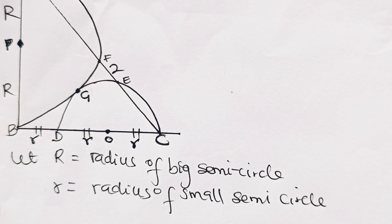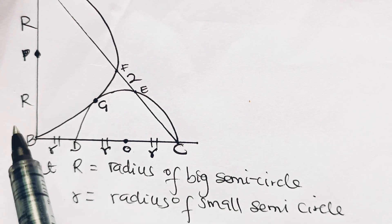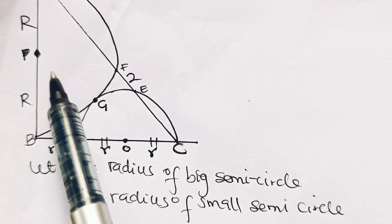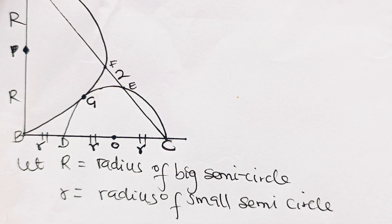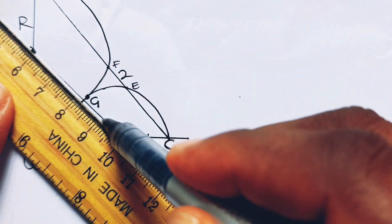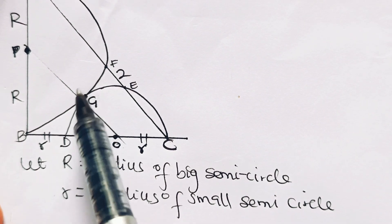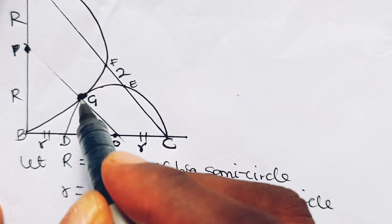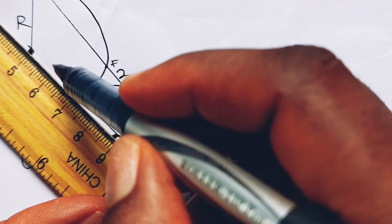Now we are going to use this theorem: anytime two circles meet each other externally or internally, when you join their centers and their point of contact, a straight line is formed. So if this is drawn to scale, joining the centers to the meeting point gives a straight line. This is our point G, and we have a straight line P, G, O.